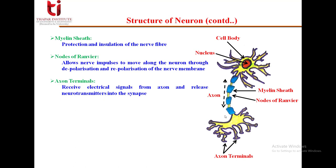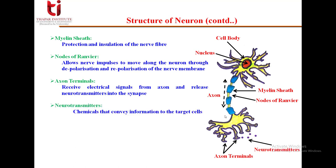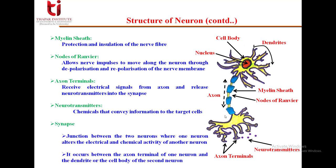Let's see what neurotransmitters and synapses are. Neurotransmitters are chemicals that convey information to the target cells, and the process occurs at a synapse — a junction between two neurons where one neuron alters the electrical and chemical activity of another neuron. It occurs between the axon terminal of one neuron and the dendrite or cell body of the second neuron.